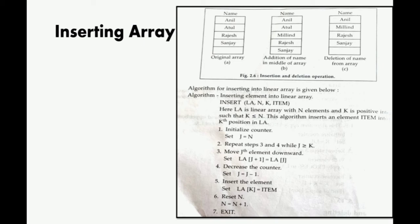The next one is inserting and deleting elements of the array. Inserting means suppose you have already made an array of five memory locations, now you want to insert a sixth element in between. The operation is known as inserting - adding another element to the existing elements. You can see in the diagram, these are the original arrays with names like Anil, Atul, Rajesh, Sanjay. In diagram B, you have one extra name, Milind, which is inserted between Atul and Rajesh.